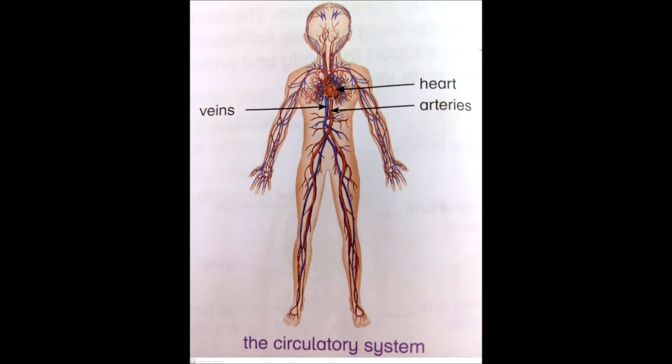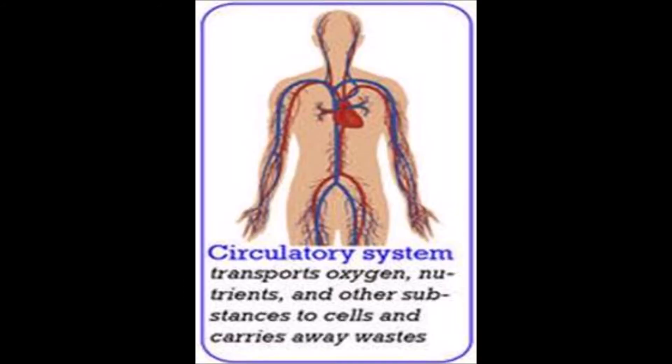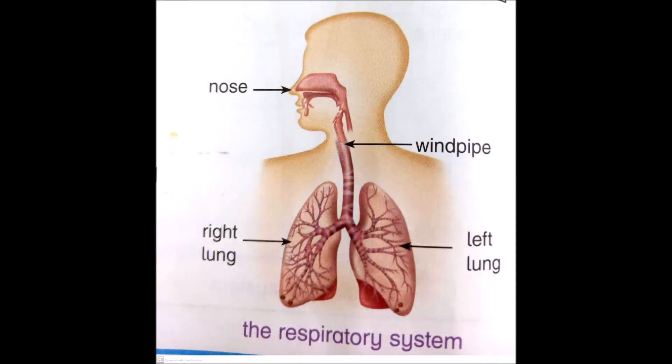The next topic is the circulatory system. The heart is the main organ in the circulatory system that pumps blood to all parts of the body. The heart needs the help of veins and arteries for this job. Arteries carry oxygenated blood, rich in oxygen, from the heart to all parts of the body. Veins carry blood back to the heart from different parts of the body.